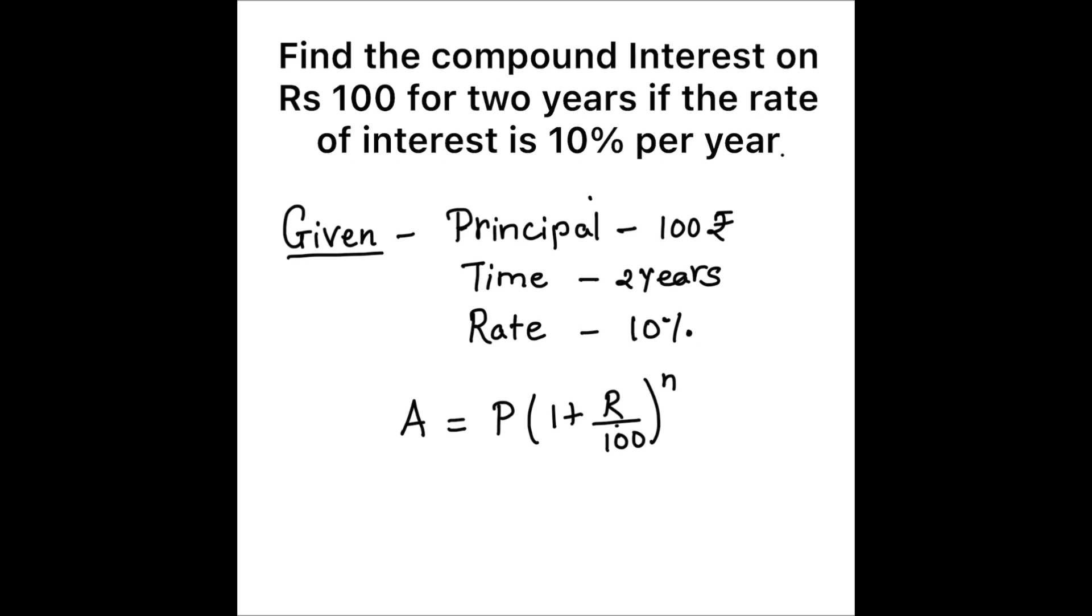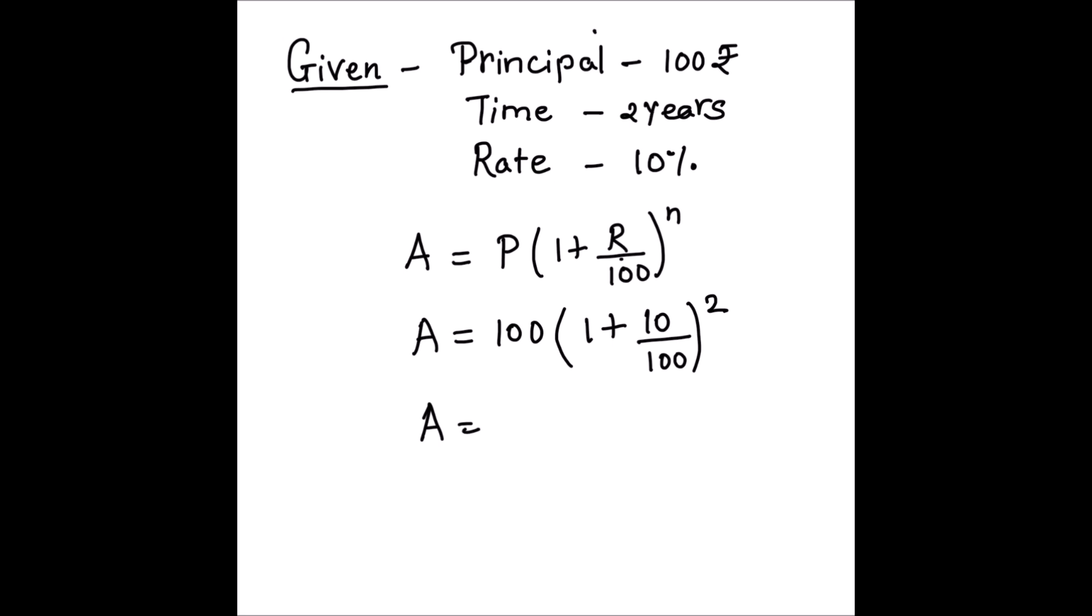Let's find the amount. Principal is given as 100, so that's 100 times (1 + R/100). R is 10, and here in the formula R is in percentage so we need not do anything, we will just write 10 here: 10 upon 100, whole raised to power n. N is given as 2 years, so A = 100(1 + 10/100)^2.